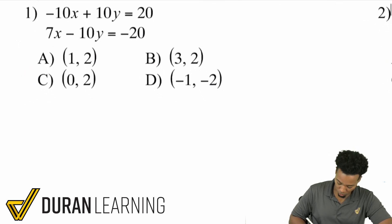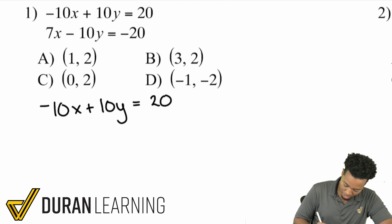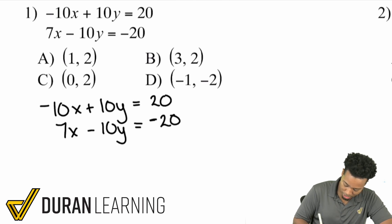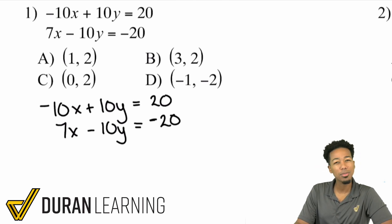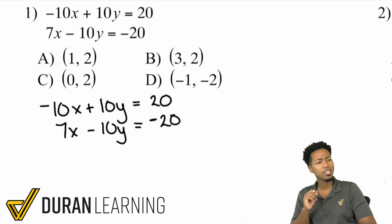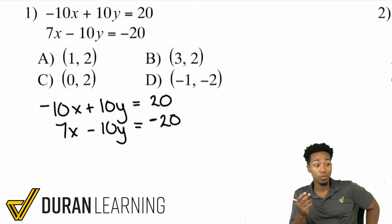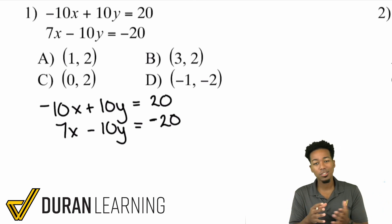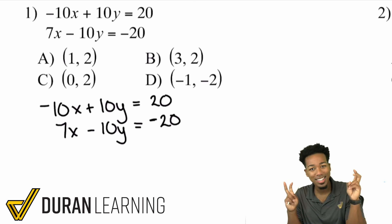Let me go ahead and show you number one. I'm going to rewrite this down here so I can show you all the work. So negative 10x plus 10y equals 20, and then we have 7x minus 10y equals negative 20. Take a look at this system of equations. This video is called systems of equations elimination. What does elimination mean? Elimination means taking out, getting rid of. When you apply that to systems of equations, we are going to eliminate or take out one of the variables.